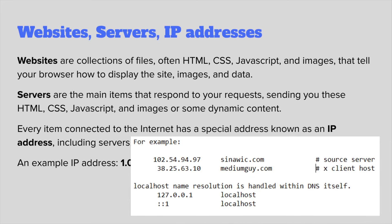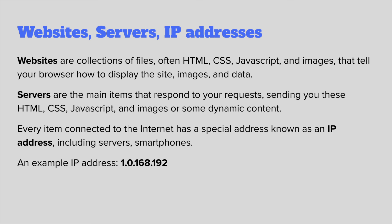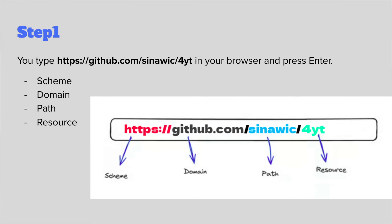An IP address has four numerical parts, like 192.168.0.1, but numbers like this are hard to remember — that's where domain names come in. GitHub.com is much easier to remember than a numerical IP address. Imagine having to remember all the phone numbers of your contacts without a contacts app. Similarly on the internet, we use the Domain Name System, or DNS, which helps locate servers — just like a contacts app looks up phone numbers by name. Now let's look at each step of the process when you type a URL.